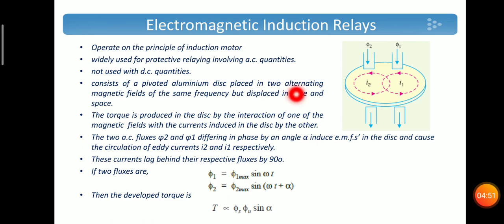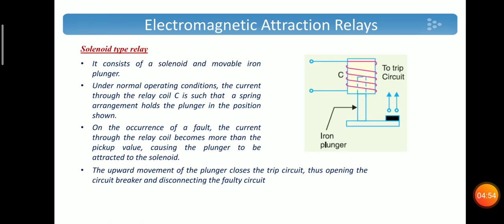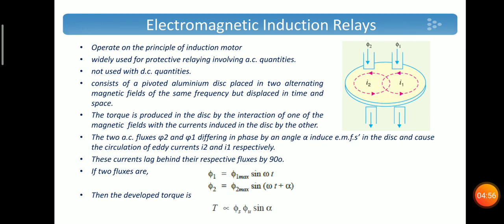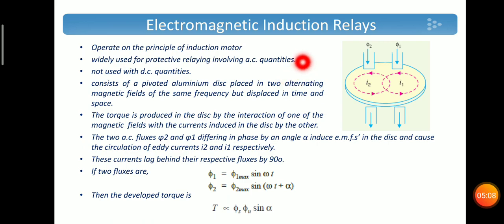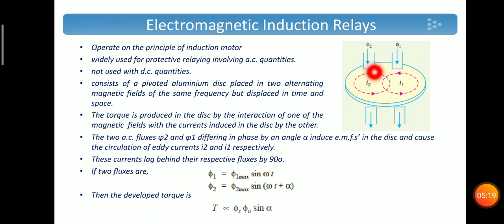Those three are electromagnetic attraction type relays. Next is electromagnetic induction relays. The principle is similar to that of an induction motor. It is widely used for measuring or for protecting AC systems — it cannot be used with DC quantities. It consists of a pivoted aluminum disc between two alternating magnetic fields phi-1 and phi-2.